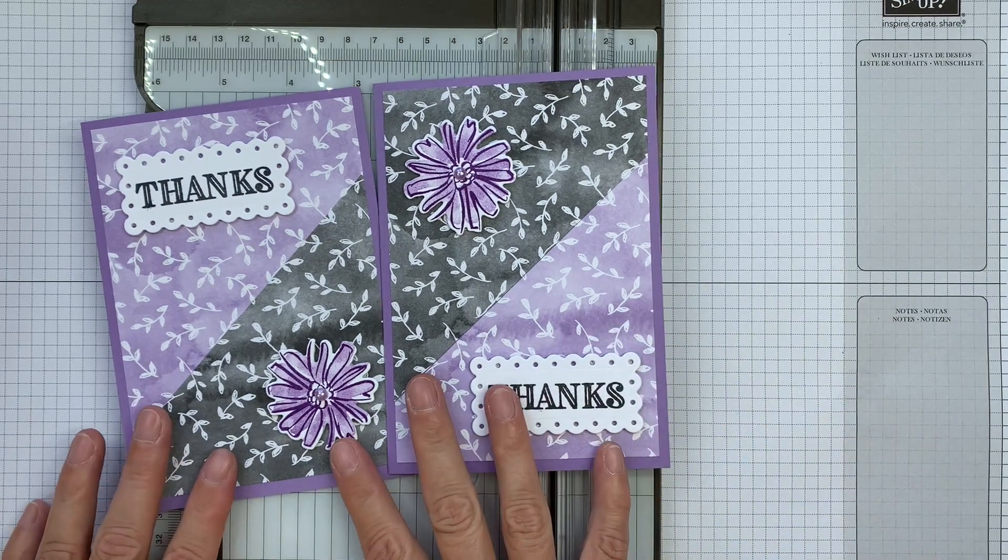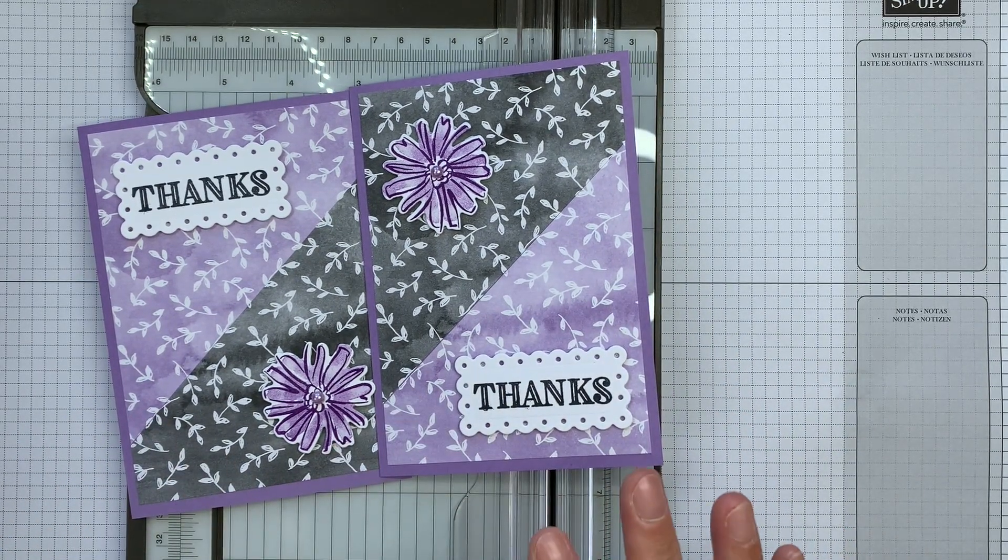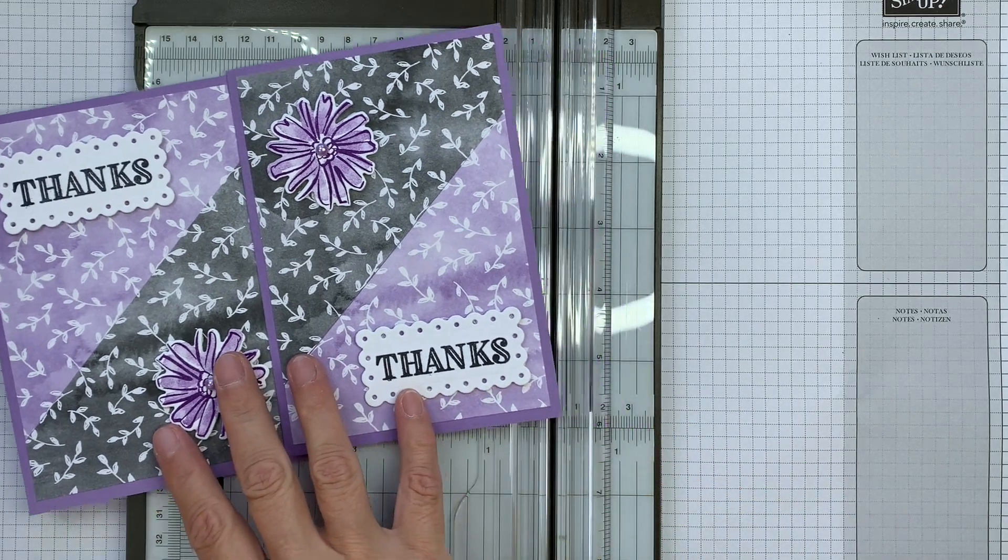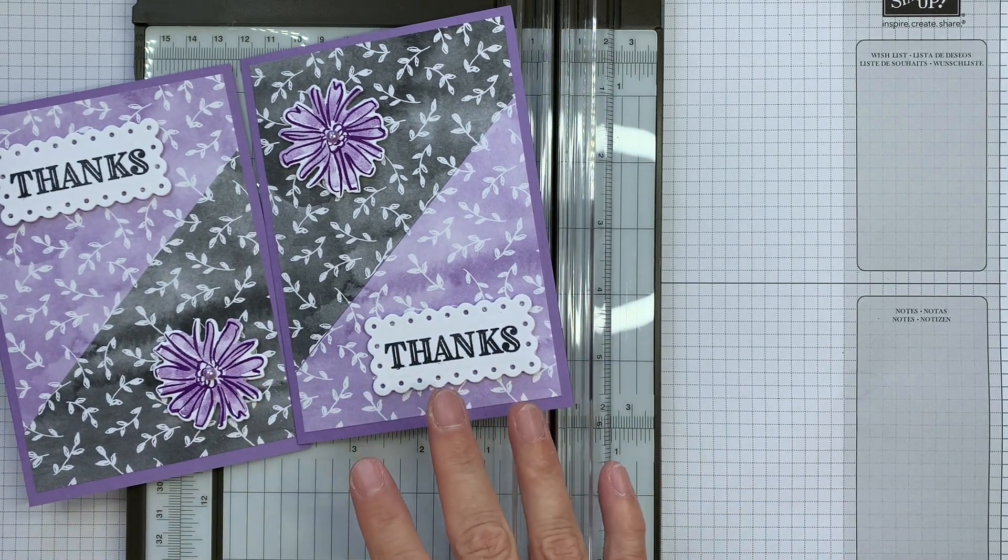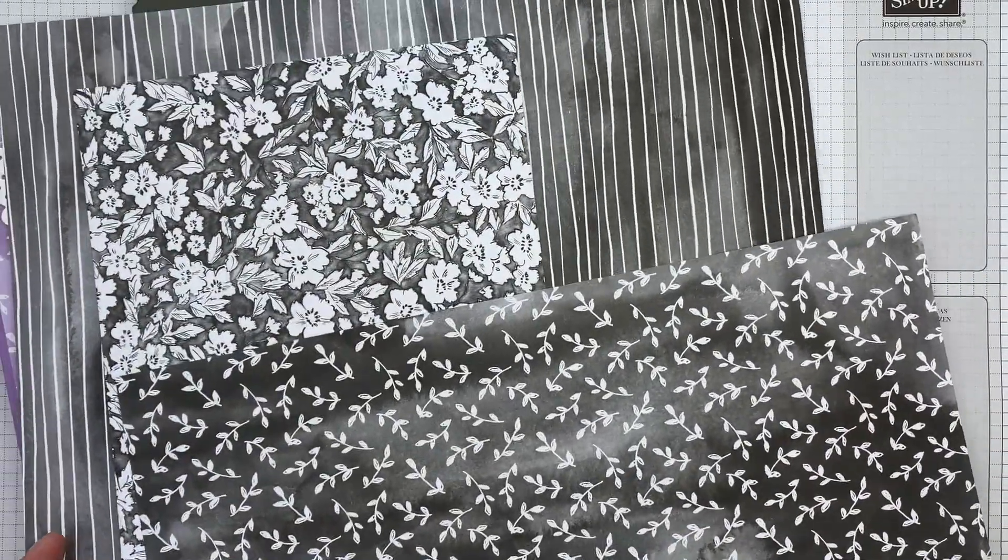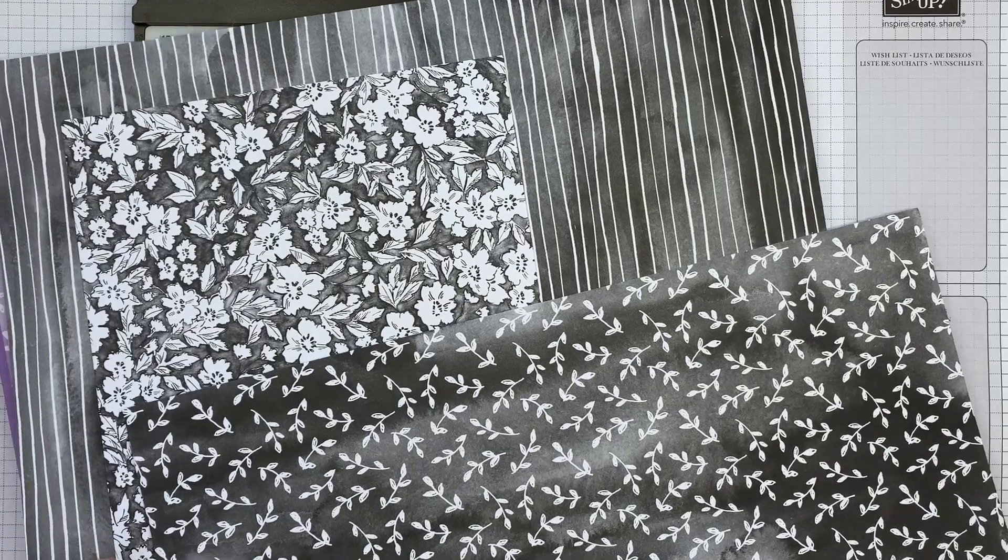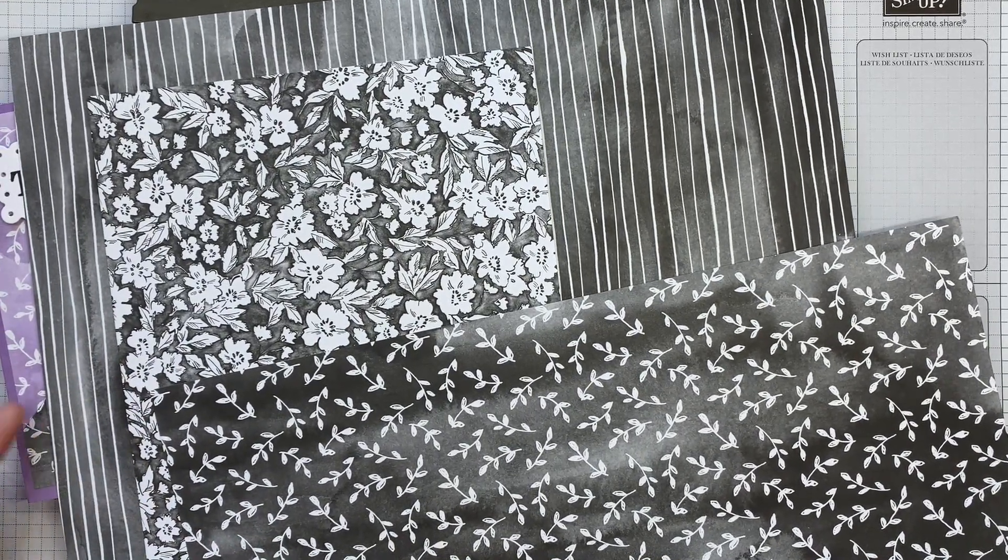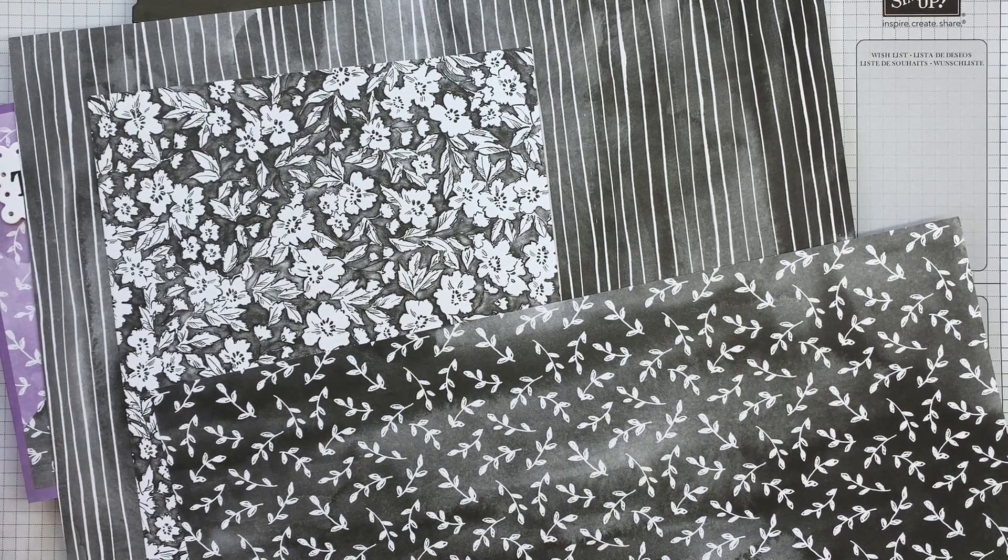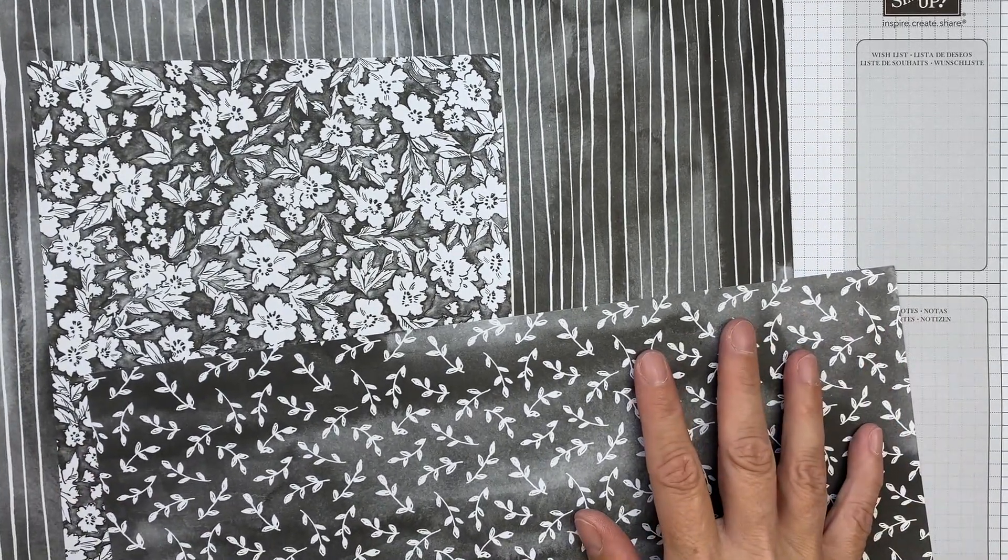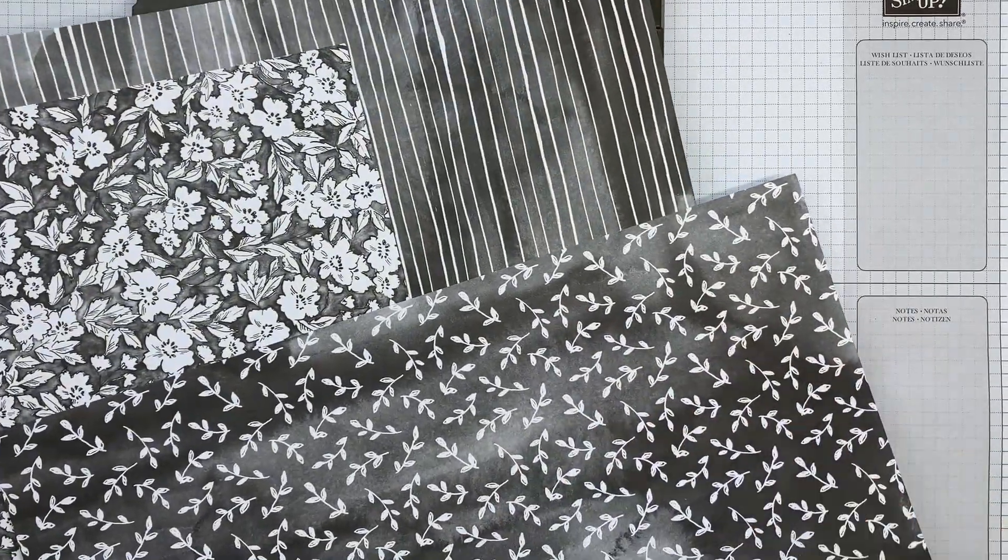So I'm going to be using a sneak peek of some of our new Sale-a-bration papers that are coming on the 3rd of August. We've got some papers that actually go really well with the hand-penned DSP. The hand-penned DSP you can actually get on offer 15% off up until the 2nd of August. So you might want to stock up on that ready to get hold of this next one.